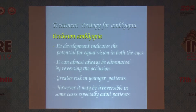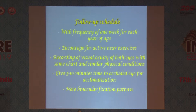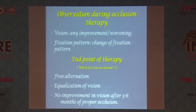The treatment is simply to occlude the other eye. Follow-up is again according to age — for a one-year-old child, follow up after one week; for a two-year-old, after two weeks, and so on. The endpoint of therapy is free alternation and equalization of vision.